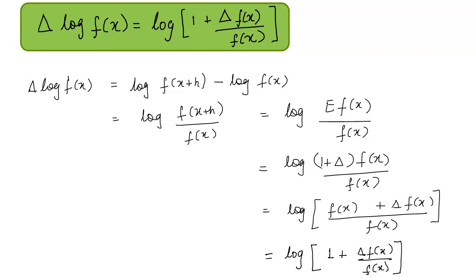To summarize what we did here: we started with the left hand side, the function delta log f(x). We applied our forward difference operator to the function, giving us log f(x plus h) minus log f(x), which can be written as a single logarithm. We then converted f(x plus h) in terms of shift operator, which can be expressed in terms of forward difference operator. Applying this operator to our function and simplifying gives the value log of 1 plus delta f(x) upon f(x). These types of questions are very frequently asked in examinations.